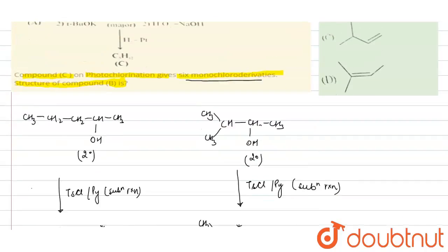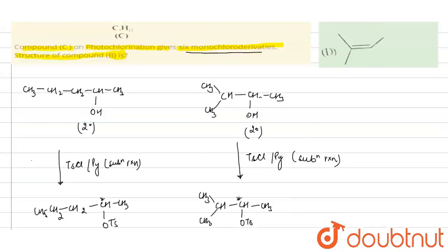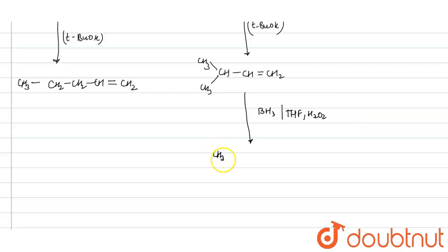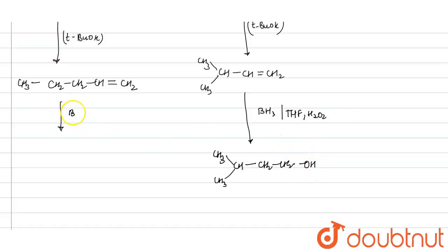Further, the B compound is reacting with BH3·THF and then H2O2/H2O - this is the hydroboration-oxidation reaction. It is an anti-Markovnikov addition. The alkene reacts with BH3·THF and H2O2 in the presence of H2O to form an alcohol product.